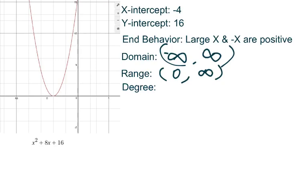And for the range, our vertex starts off at 0 and keeps going on to infinity, such as your domain.